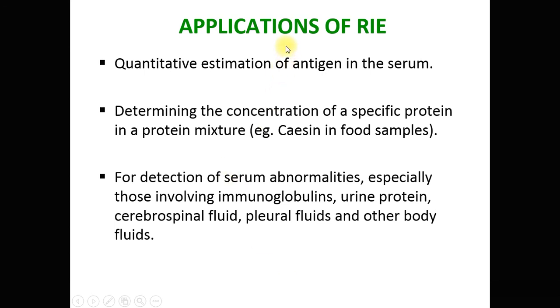This technique has applications for the quantification of antigen in serum, and for quantifying specific proteins in protein mixtures — for example, casein in food samples. It is also used for detection of serum abnormalities, especially those involving immunoglobulins, urine proteins, CSF (cerebrospinal fluid), pleural fluid, and other body fluids. That's all about this technique. Thanks a lot for your patient hearing. Please subscribe to the channel for more informative lectures. Thank you.